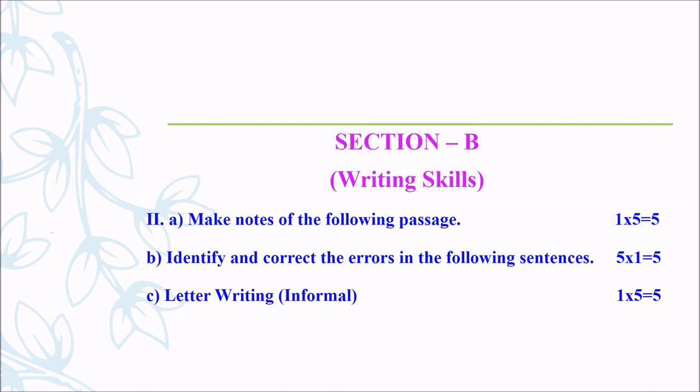Section B, Writing Skills. Roman Letter 2, Make notes of the following passage. For notemaking, you will get 5 marks. In Spotting Errors, you will get 5 questions, each question carries 1 mark, so totally 5 marks for Spotting Errors. Next one is Letter Writing — they will ask 1 informal letter, and for that you will get 5 marks.